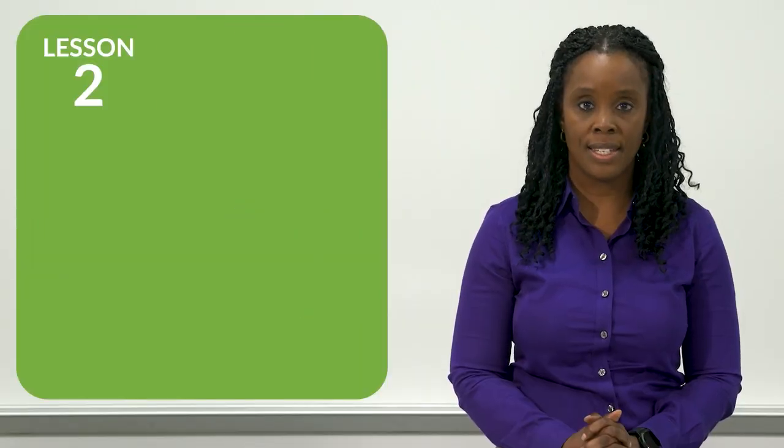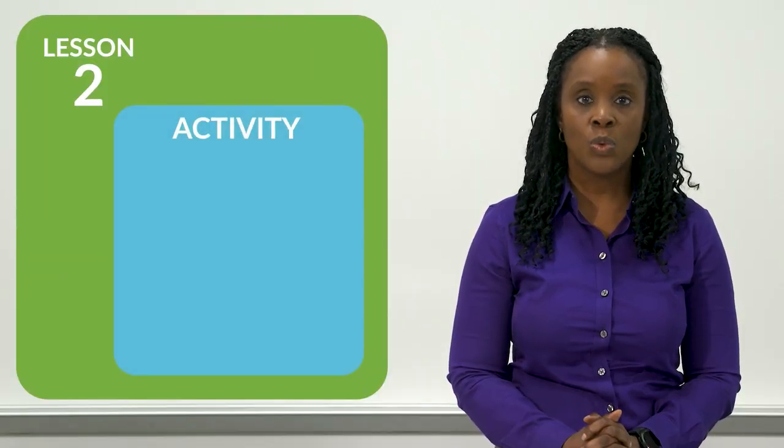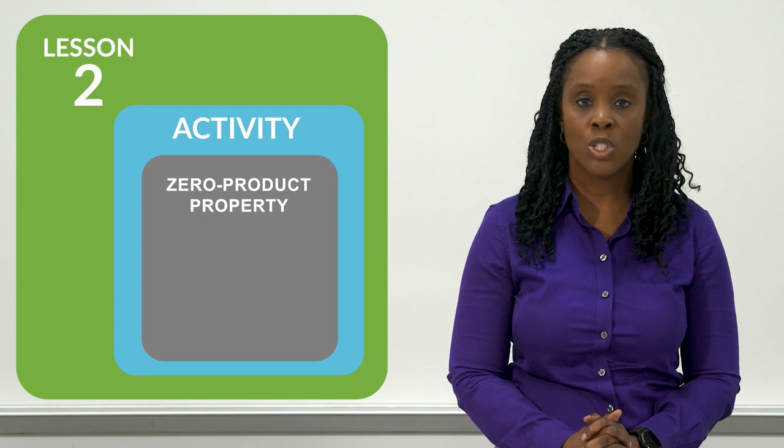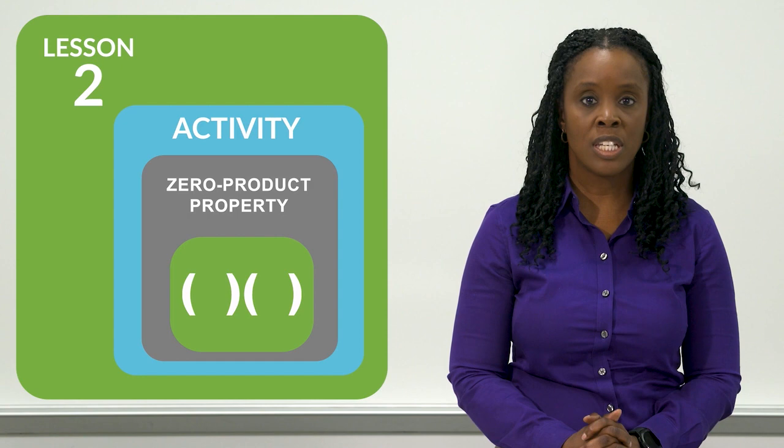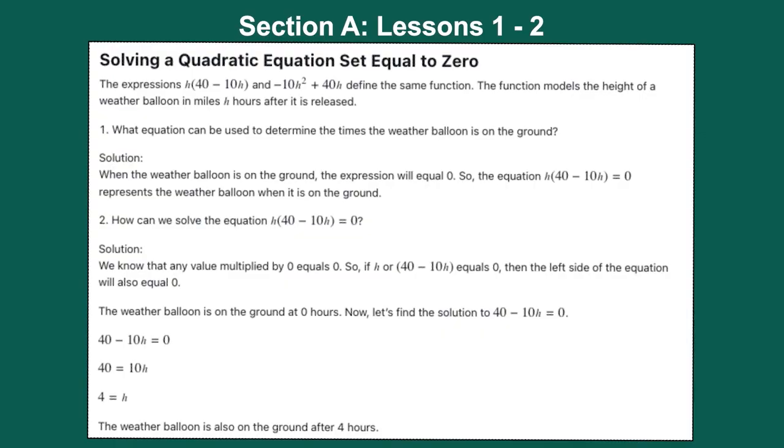The third activity in Lesson 2 of this unit is where students begin to solve quadratic equations using the zero-product property, so that particular piece of the lesson is not to be missed. In fact, you can see in the captured image that students are taught how to solve the equation h times the quantity of 40 minus 10h equal to zero.